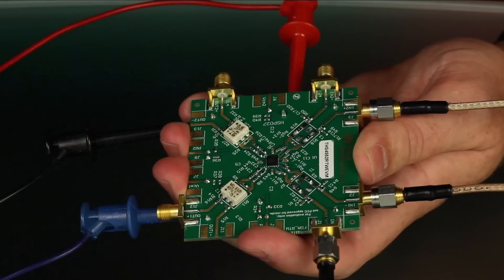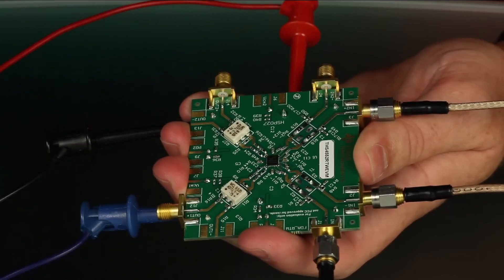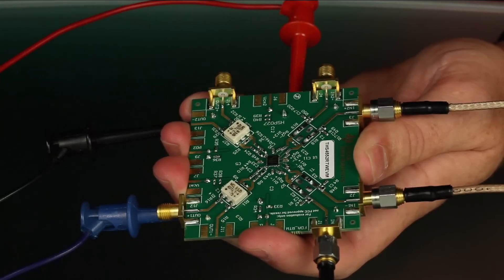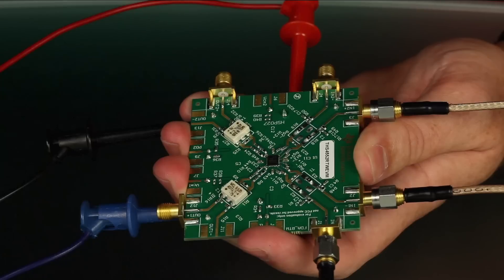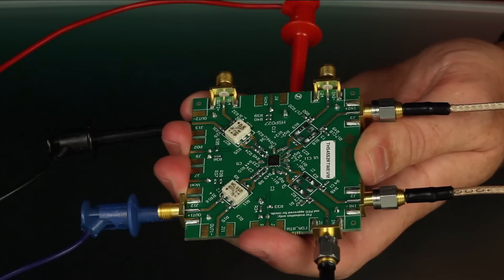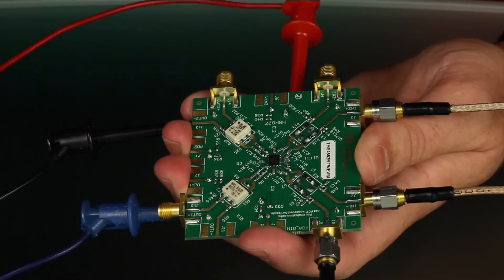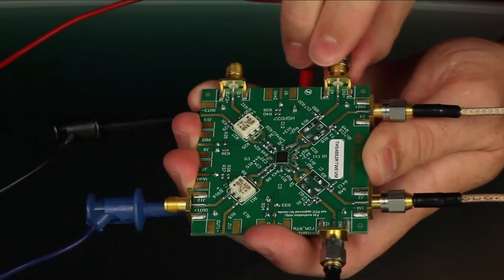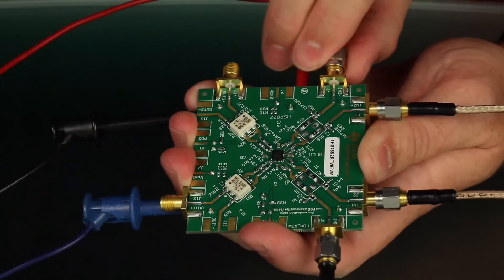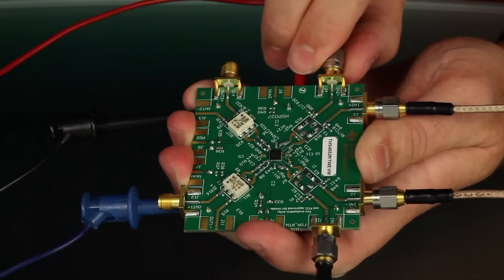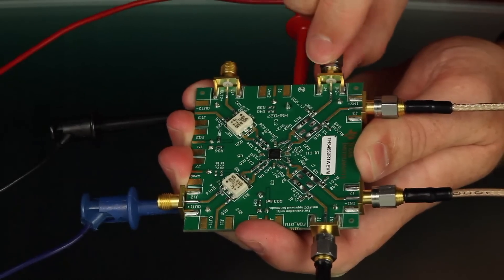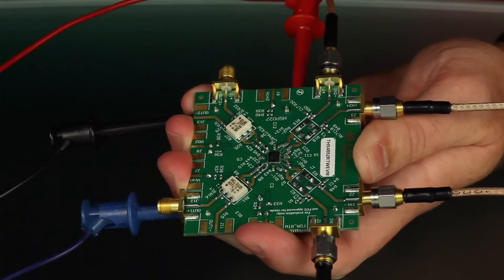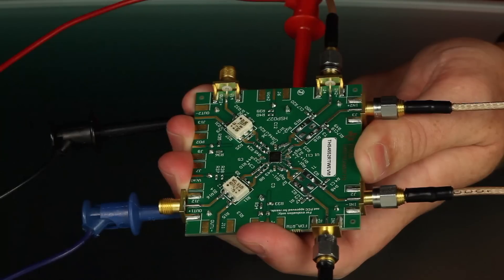Once the supply connections have been made, input signals may be connected to the board. By default, the amplifier on the board is configured for a gain of one. Differential input signals can be applied to the N plus and N minus SMA connectors for either or both of the amplifier channels like this. For best results, the signal should be routed to the EVM with cables that have a 50 ohm impedance.